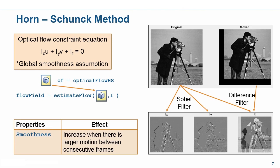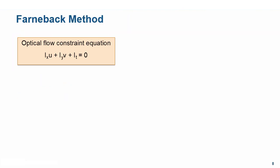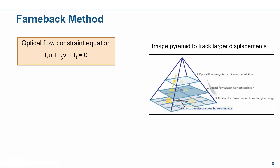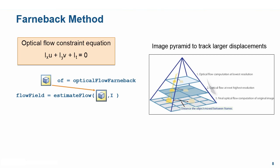If we expect the displacement of pixels between consecutive frames to be large, we can use the Farneback method instead. The Farneback method also solves the optical flow constraint equation. It constructs an image pyramid with n levels, where n can be specified by the user. Each level has a lower resolution compared to the previous level, and the algorithm can track points at multiple levels of resolution starting at the lowest. Increasing the number of pyramid levels enables handling larger displacements of points between frames, though the number of computations also increases. We can implement this using the opticalFlowFarneback object.